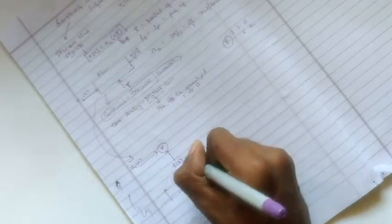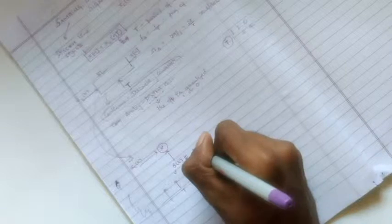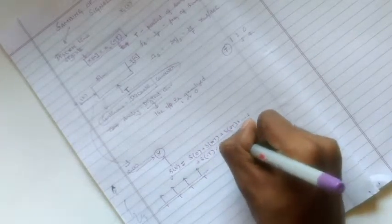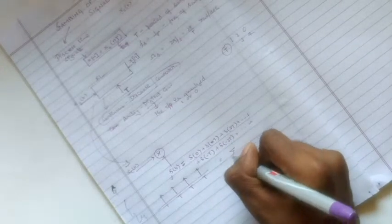So we can write s of t as delta of 0 plus delta of T plus delta of 2T and so on. Even the negative side, delta of minus T plus delta of minus 2T and so on up to infinity. So you can write this basically as sigma n equal to minus infinity to infinity delta of t minus nT.